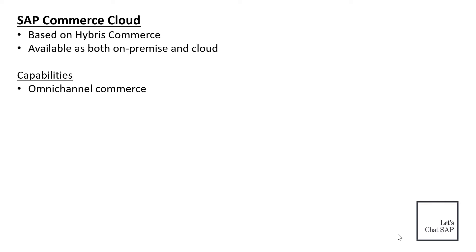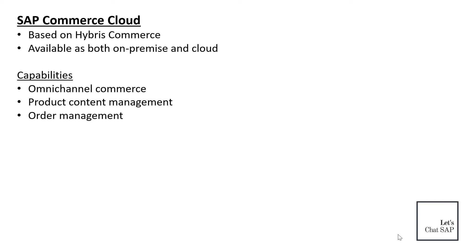Commerce Cloud offers tailored promotions and recommendations to increase customer engagement and sales. Product Content Management allows centralized management where users can bulk edit, bulk publish, and bulk upload multiple products, categorizing them based on diverse attributes to save time and ensure consistency. Order Management enables customers to order or return products through multiple channels, giving companies a single view of inventory, shipping, and returns to provide a better customer experience.